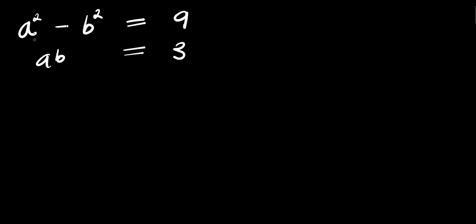Hello, we have this equation: a squared minus b squared equals 9, and a times b equals 3. We are solving for a plus b — that is the value of a plus b.